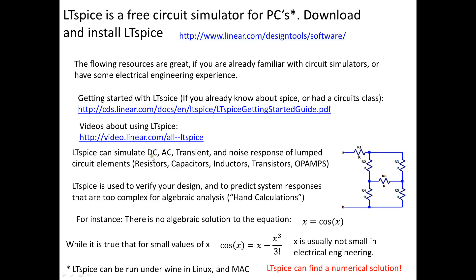LTSpice can simulate DC, AC, transient, and noise of lumped circuit elements, and that's resistors, capacitors, inductors, transistors, and op amps. DC is when the currents and voltages don't change in time. AC is when the voltages and currents have a frequency component. Transient is how things change in time, and noise is a little bit beyond this introductory course.